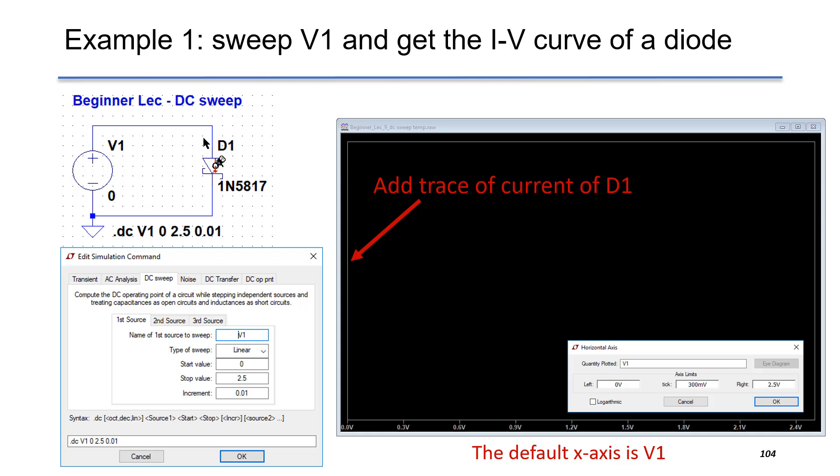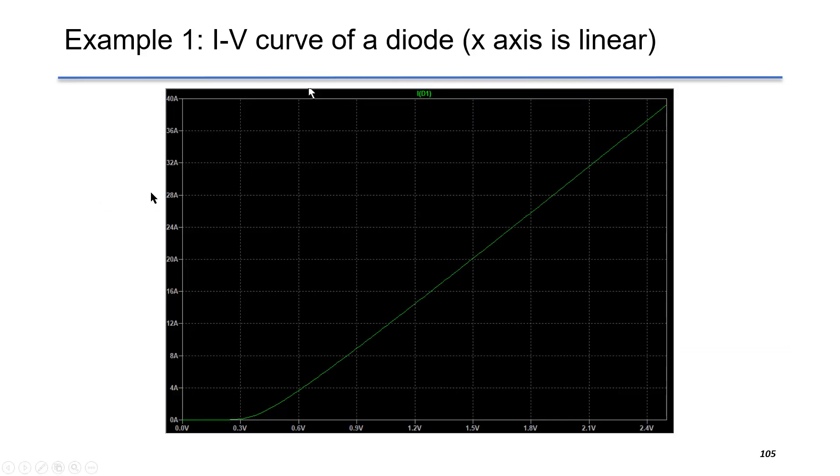And if you move your mouse over D1 until this icon becomes a current probe, you can right-click and add the trace of D1's current. This is the IV curve of a diode, so it shows nonlinear current versus voltage characteristic.